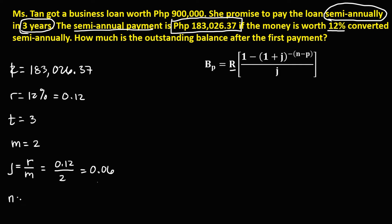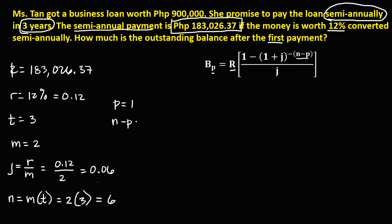For the number of periods N, we have M times the time. Since M is 2 and the time is 3, the number of periods is equal to 6. Then to solve for P, since we're looking at after the first payment, P is equal to 1. And for N minus P, since N is 6 minus P equals 1, N minus P is equal to 5.